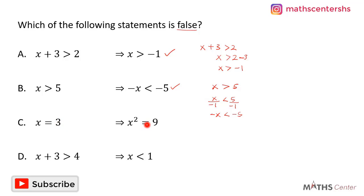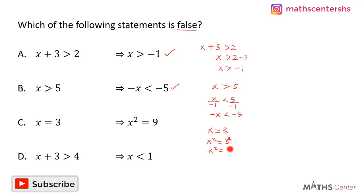Let's consider the next statement: x equals 3 implies x squared equals 9. We have x equals 3. If we square both sides we get x squared equals 3 squared, which gives x squared equals 9. This statement is also true: if x equals 3 then x squared equals 9.